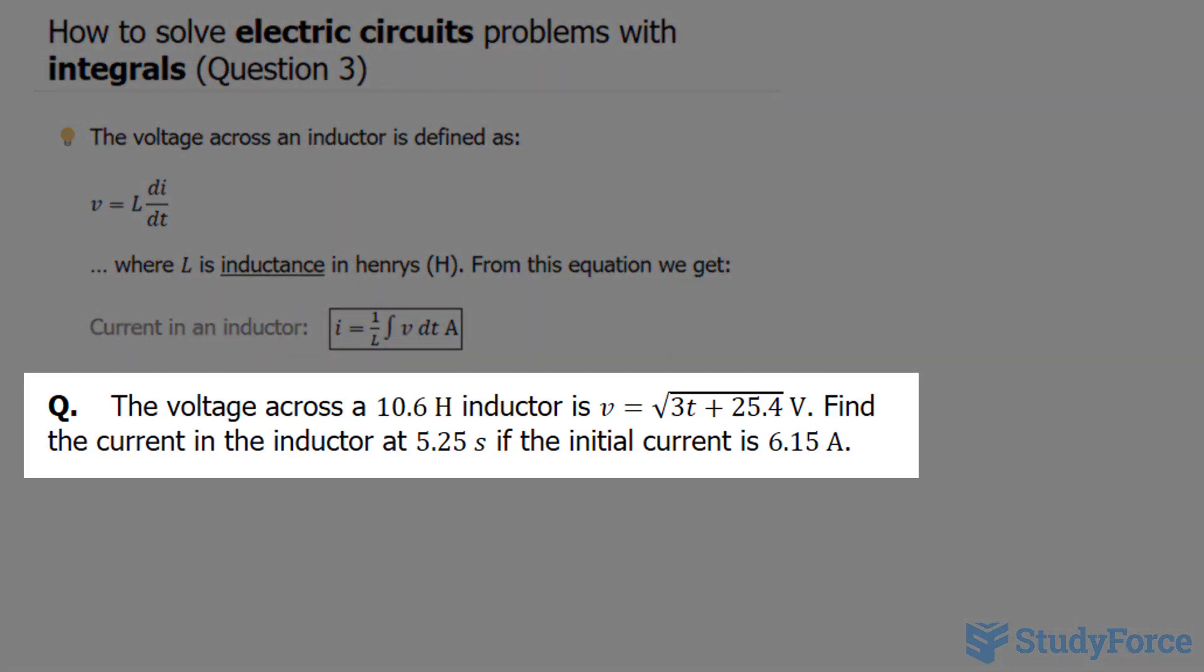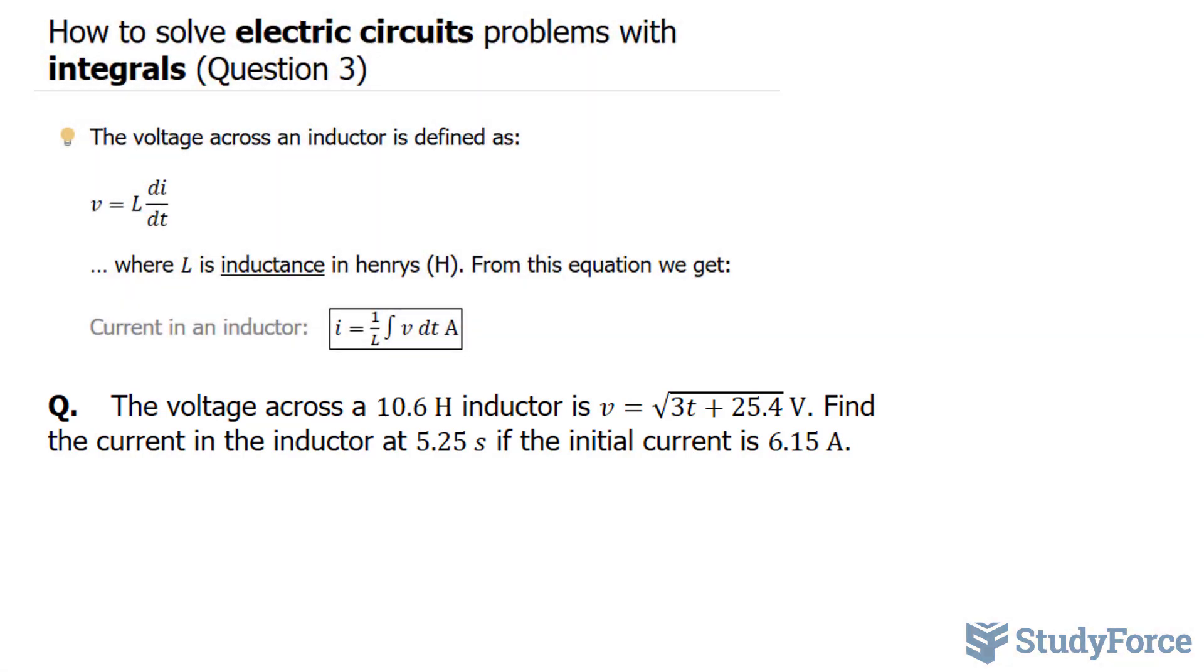The question reads: the voltage across a 10.6 Henry inductor is defined as this equation, v is equal to the square root of 3t plus 25.4, and t represents the time where v represents the voltage. Find the current in the inductor at 5.25 seconds if the initial current is 6.15 amps.